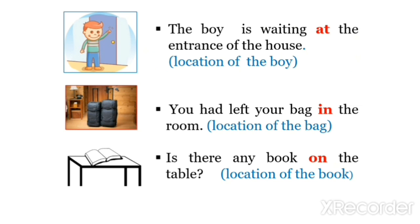आपको इससे समझ आया होगा कि हम किसी भी व्यक्ति या वस्तु की location बताने के लिए preposition of place का use करते हैं। एक और बात गौर करने जैसी है कि हम इस location को अलग-अलग तरीके से बताते हैं — कोई चीज़ किसी चीज़ के ऊपर रखी और उसे छू रही है, कोई चीज़ किसी exact point पर है, या कोई चीज़ किसी जगह के अंदर है या नीचे है। इस तरह अलग-अलग locations बताने के लिए हम अलग-अलग prepositions of place का use करते हैं।